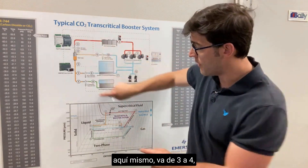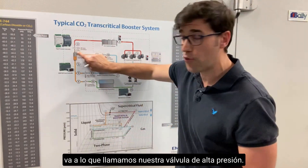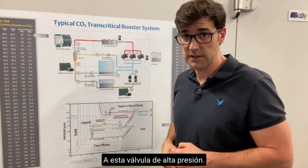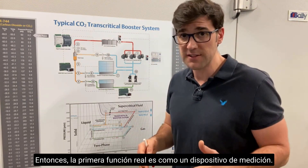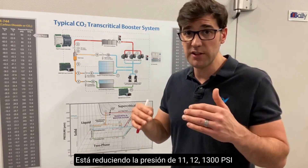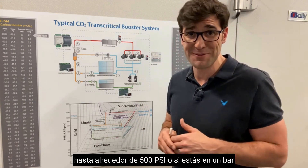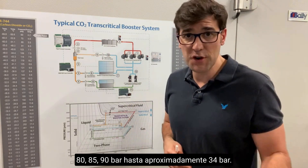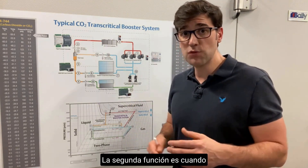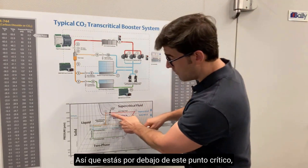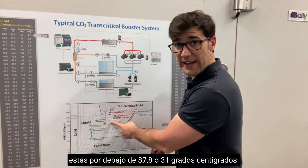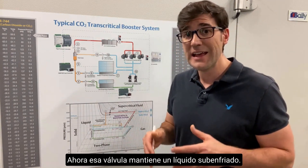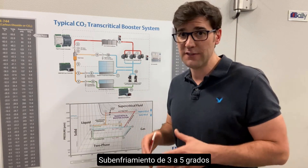Out of the gas cooler, from three to four, we go to what we call our high pressure valve, which has three main functions. The first function is as a metering device — it reduces pressure from 1100–1300 psi down to about 500 psi, or from 80–90 bar down to about 34 bar. The second function applies when you're in the subcritical zone, below 87.8°F or 31°C — the valve maintains a subcooled liquid with 3 to 5 degrees of subcooling.